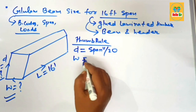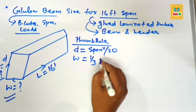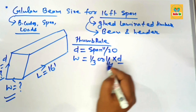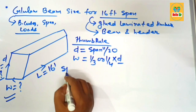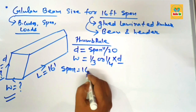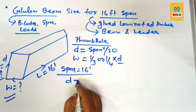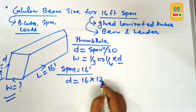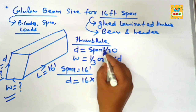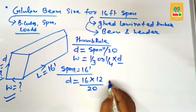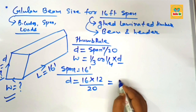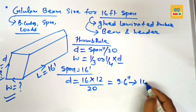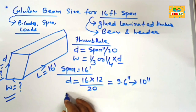The width section of the beam is one-third to one-fourth of the depth section — this is the thumb rule. The span length is 16 foot, so the depth section equals 16 multiplied by 12 (converting feet to inches), divided by 20. This comes to about 9.6 inches, and the nominal depth is 10 inches.